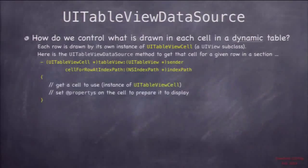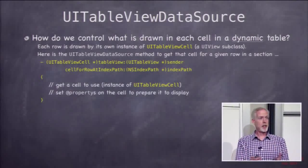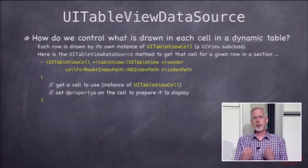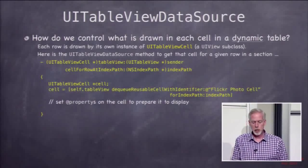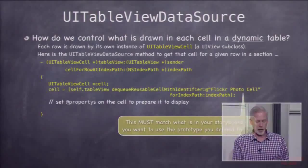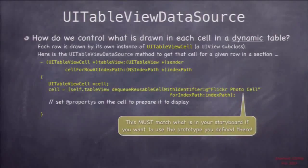There are two things we need to do in here: create a cell and then configure that cell. To create a cell we use a method called dequeueReusableCellWithIdentifier:forIndexPath. What this does is it essentially goes and looks in the storyboard, finds that identifier — for example 'Flickr PhotoCell' — and copies that prototype, then returns it.